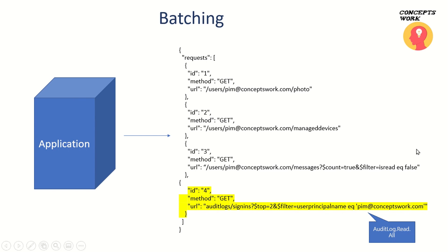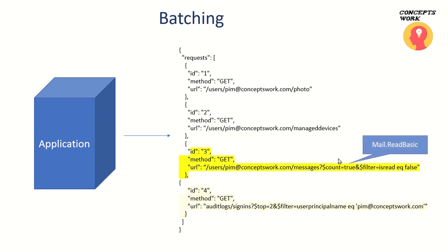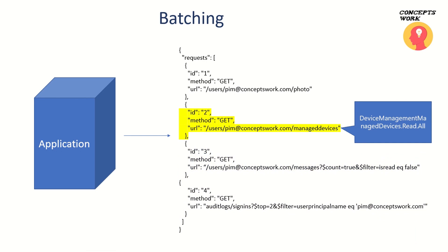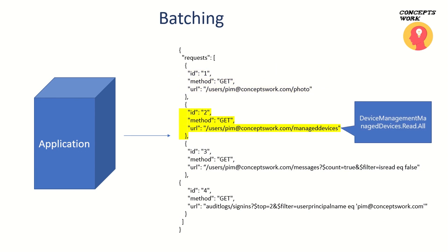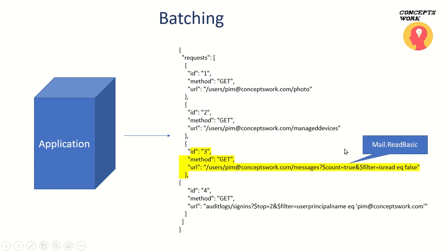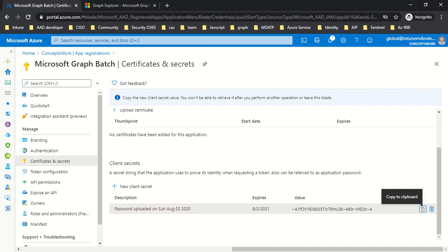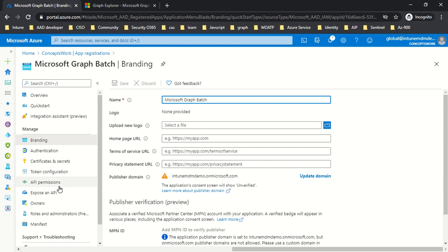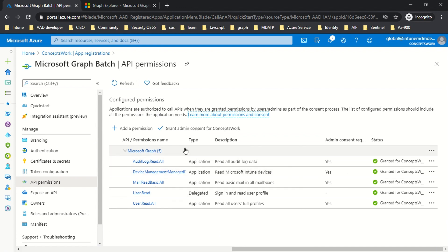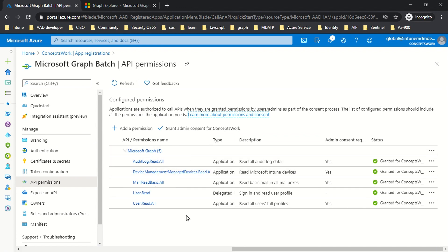As addressed before, all these endpoints require different permissions to be granted. I have already created an Azure AD application and manually granted the required permissions so that I can use the client credential flow. Let me show you this in action — I'll switch to my browser where I'm signed in as global admin. This is the application I've added, named Microsoft Graph Batch, and if I go to the API permissions section, all the permissions have been granted manually.